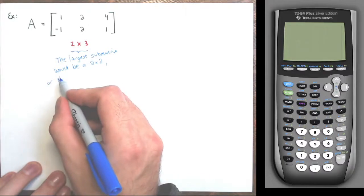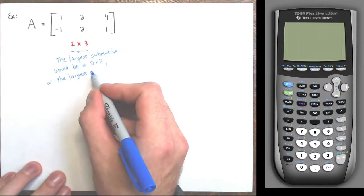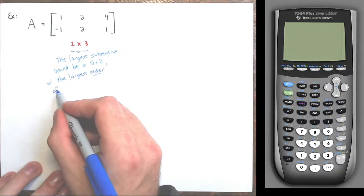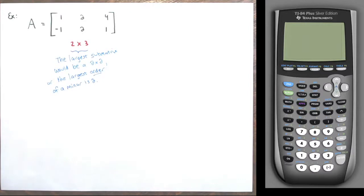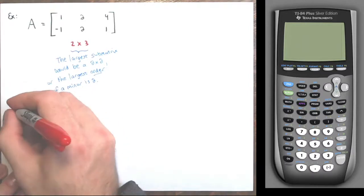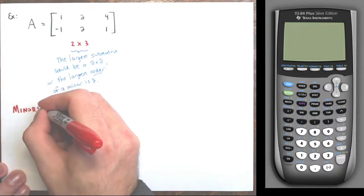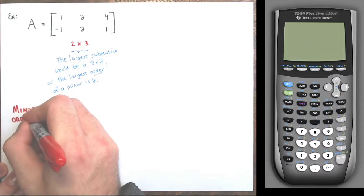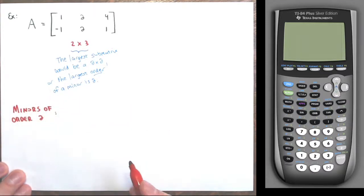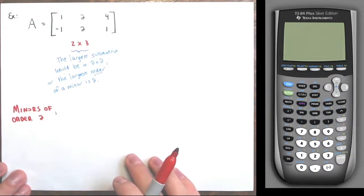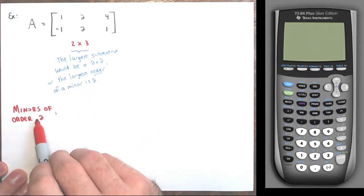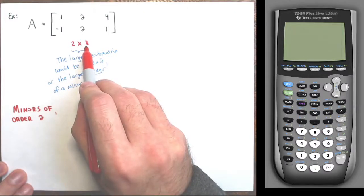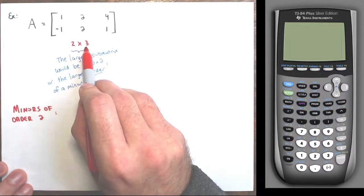So let me show you what the minors of order two look like for this matrix. There's not just one like last time — with a two by three matrix, in order to create a two by two submatrix, I need to remove one column, since removing one column from a two by three gives a two by two.